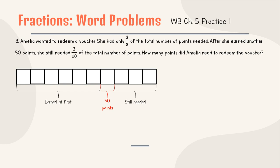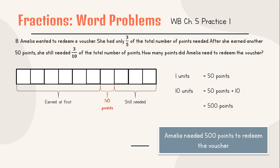How many points did Emilia need to redeem the voucher? If 1 unit equals 50, 10 units equals 500. So Emilia needed 500 points to redeem the voucher. Then, if I have the question: how many more points did Emilia need to redeem the voucher? That means these 3 units needed.